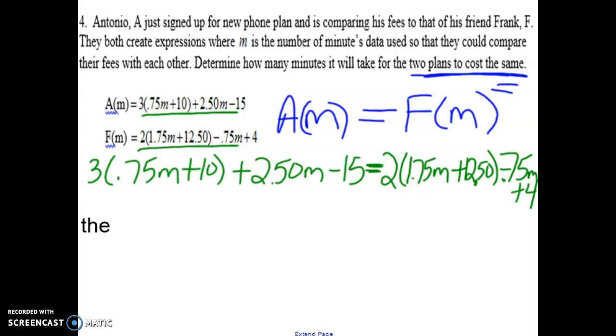Now it's time to do some simplifying. We've talked about to distribute or not to distribute. In this case, we want to distribute. So multiplying, use a calculator if this is still giving you some trouble. $2.25m plus, make sure you do it to both terms inside, 30. Then we got still the 2.50m minus 15 because that was not in parentheses and not affected by distributing.